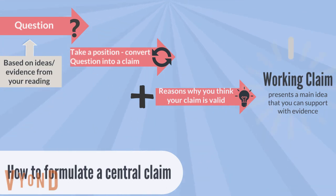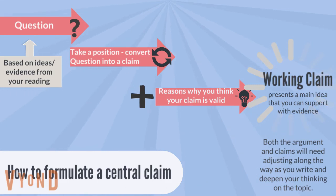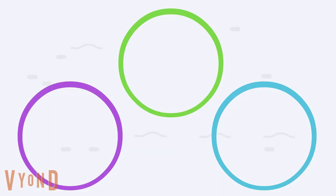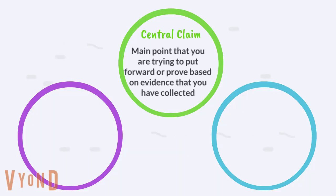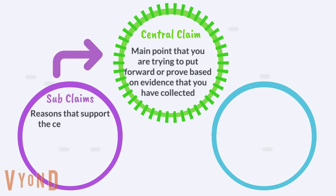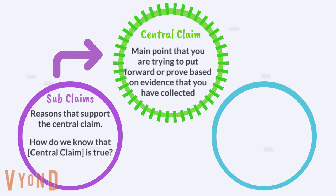It is called a working claim because both the argument and claim will need adjusting along the way as you write and deepen your thinking on the topic. The central claim, or thesis, is the main point that you are trying to put forward or prove based on evidence that you have collected. The central claim is supported by subclaims, which are reasons that support the central claim. All subclaims must answer the question: how do we know that our central claim is true?